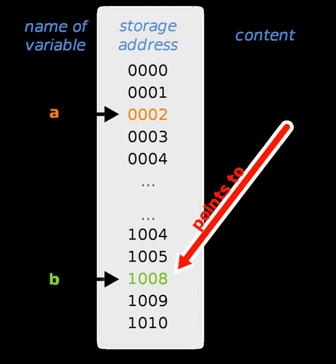Fortran 90 introduced a strongly typed pointer capability. Fortran pointers contain more than just a simple memory address; they also encapsulate the lower and upper bounds of array dimensions, strides (for example, to support arbitrary array sections), and other metadata. An association operator => is used to associate a pointer to a variable which has a TARGET attribute. The Fortran 90 ALLOCATE statement may also be used to associate a pointer to a block of memory. Fortran 2003 adds support for procedure pointers, and, as part of the C interoperability feature, supports intrinsic functions for converting C-style pointers into Fortran pointers and back.